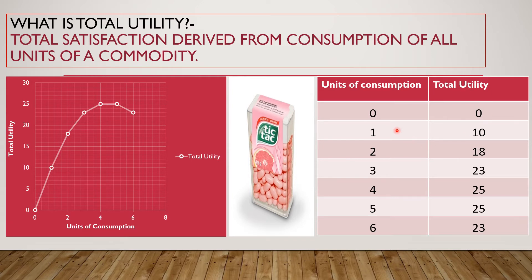After consumption of one unit of the commodity, I derive a satisfaction of 10 utils — expressed as a cardinal value. When I consume two units, I derive a total satisfaction of 18 utils. After the third unit, the total satisfaction from all three units is 23 utils. After the fourth unit, total utility is 25 utils.